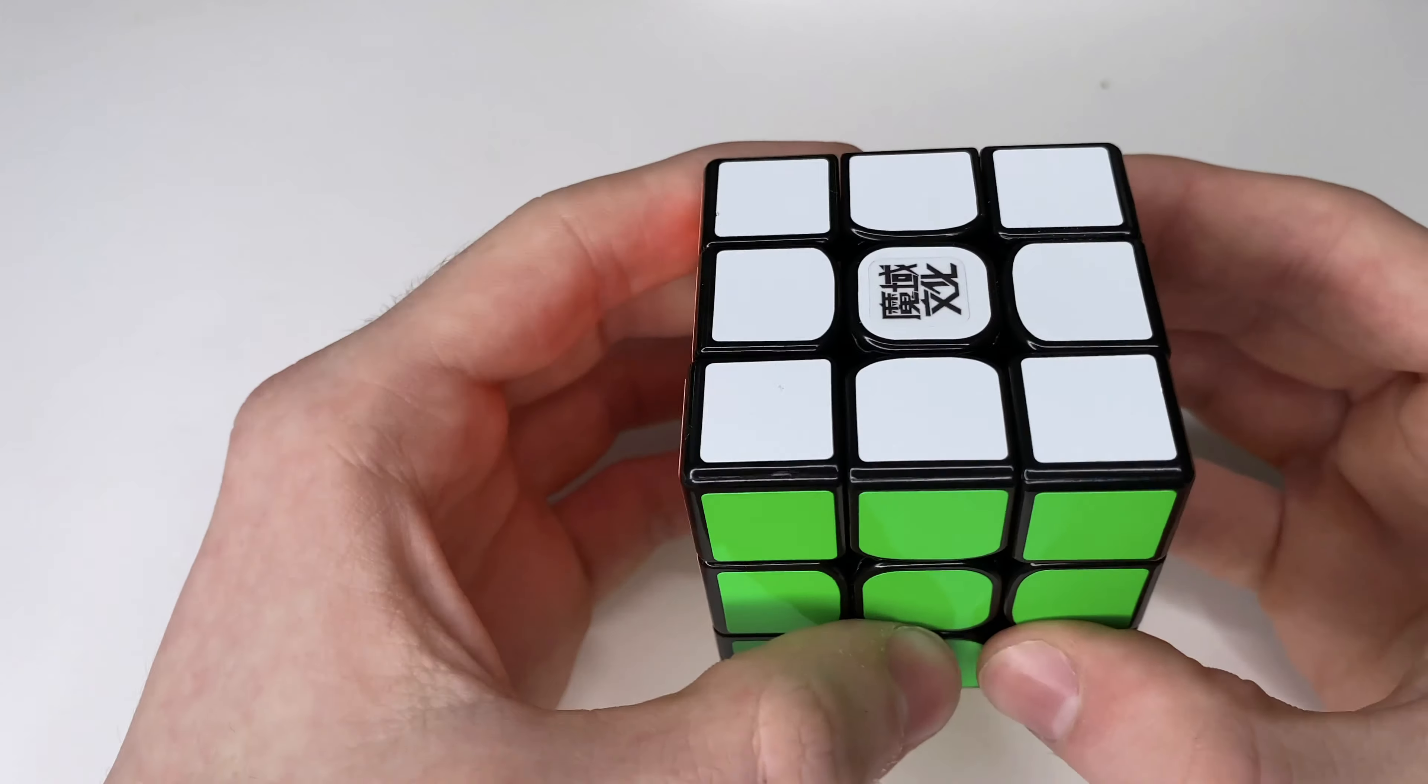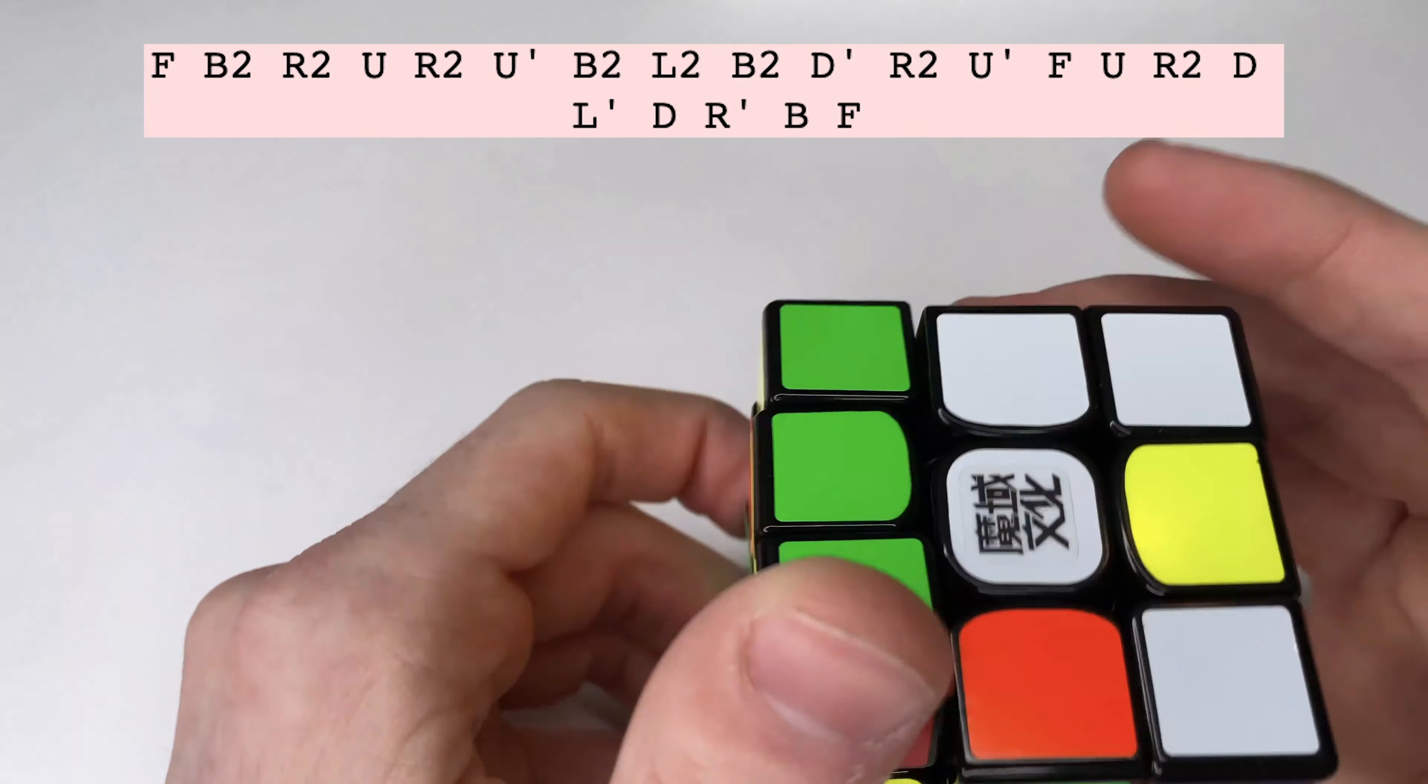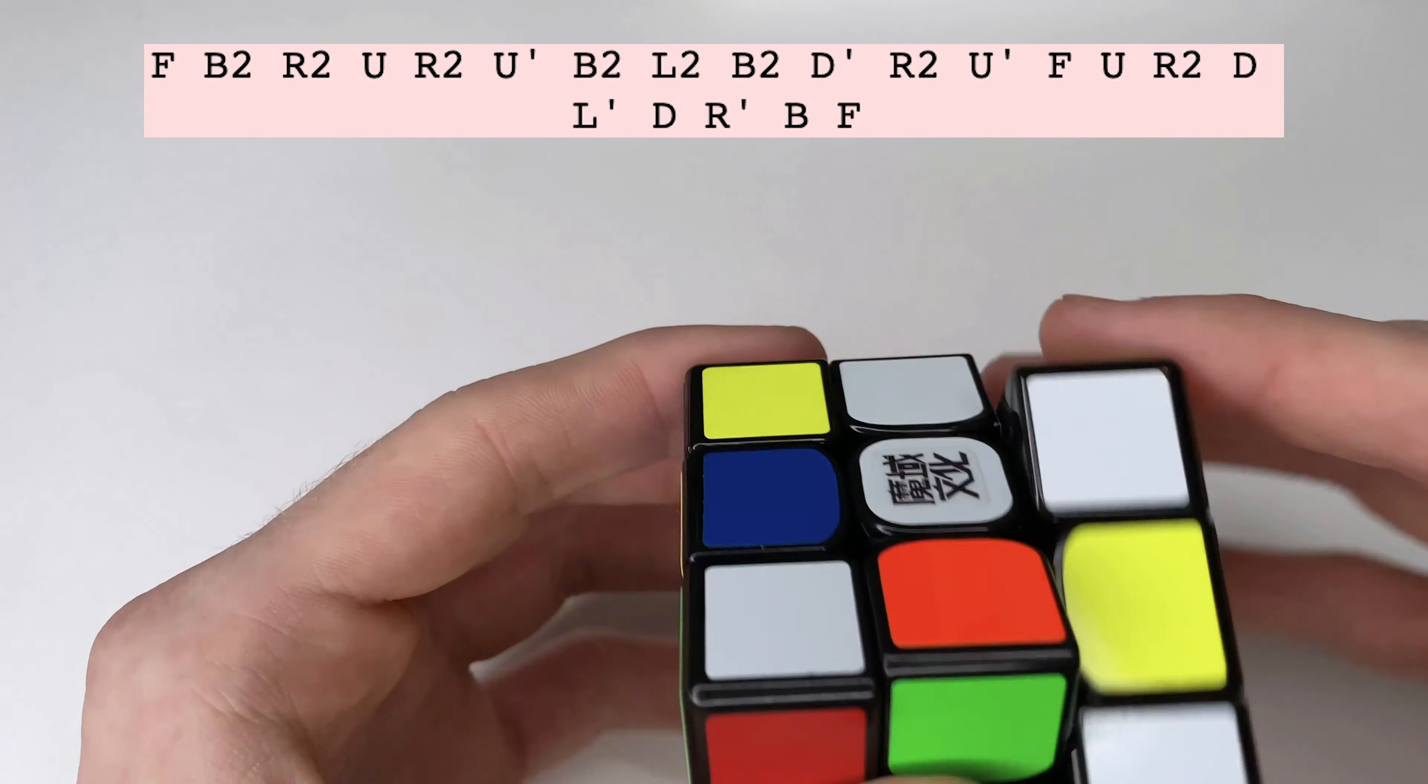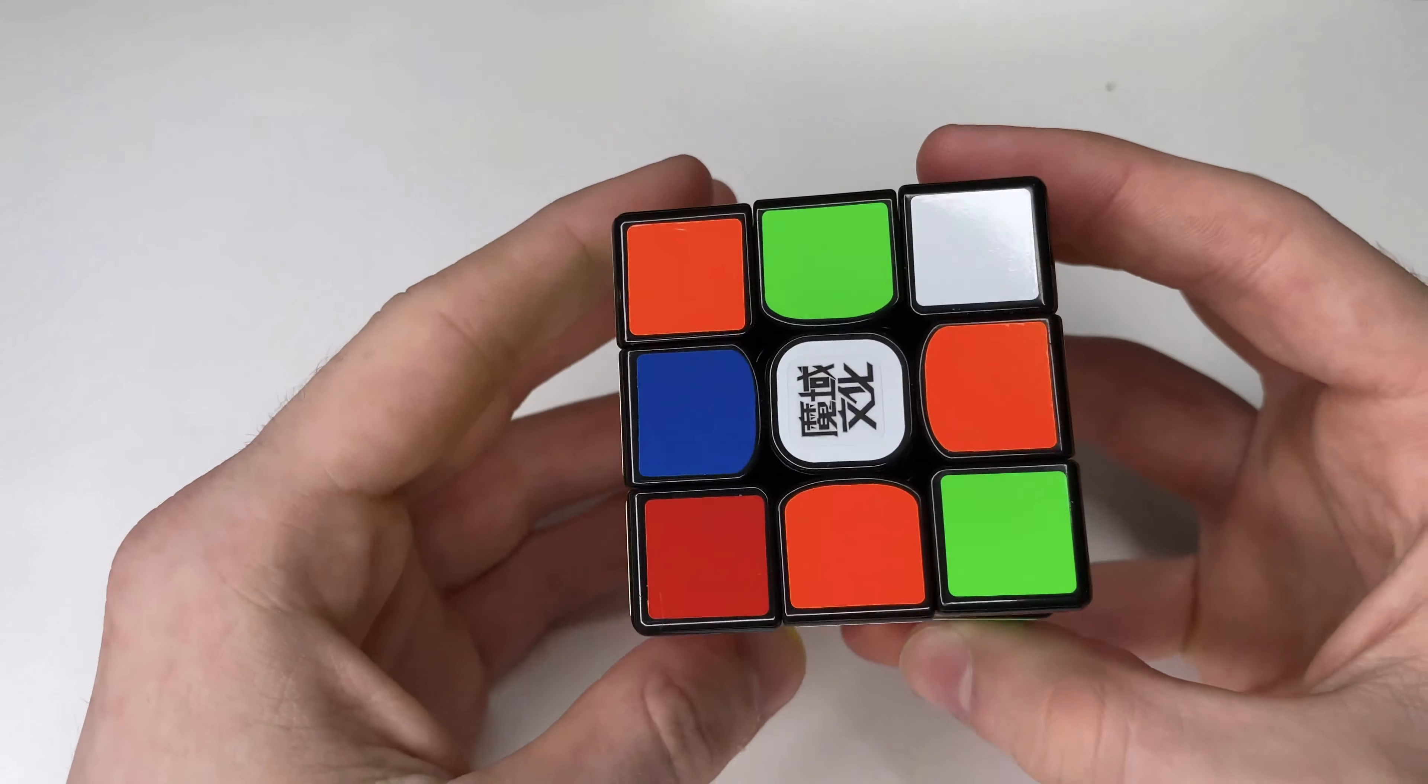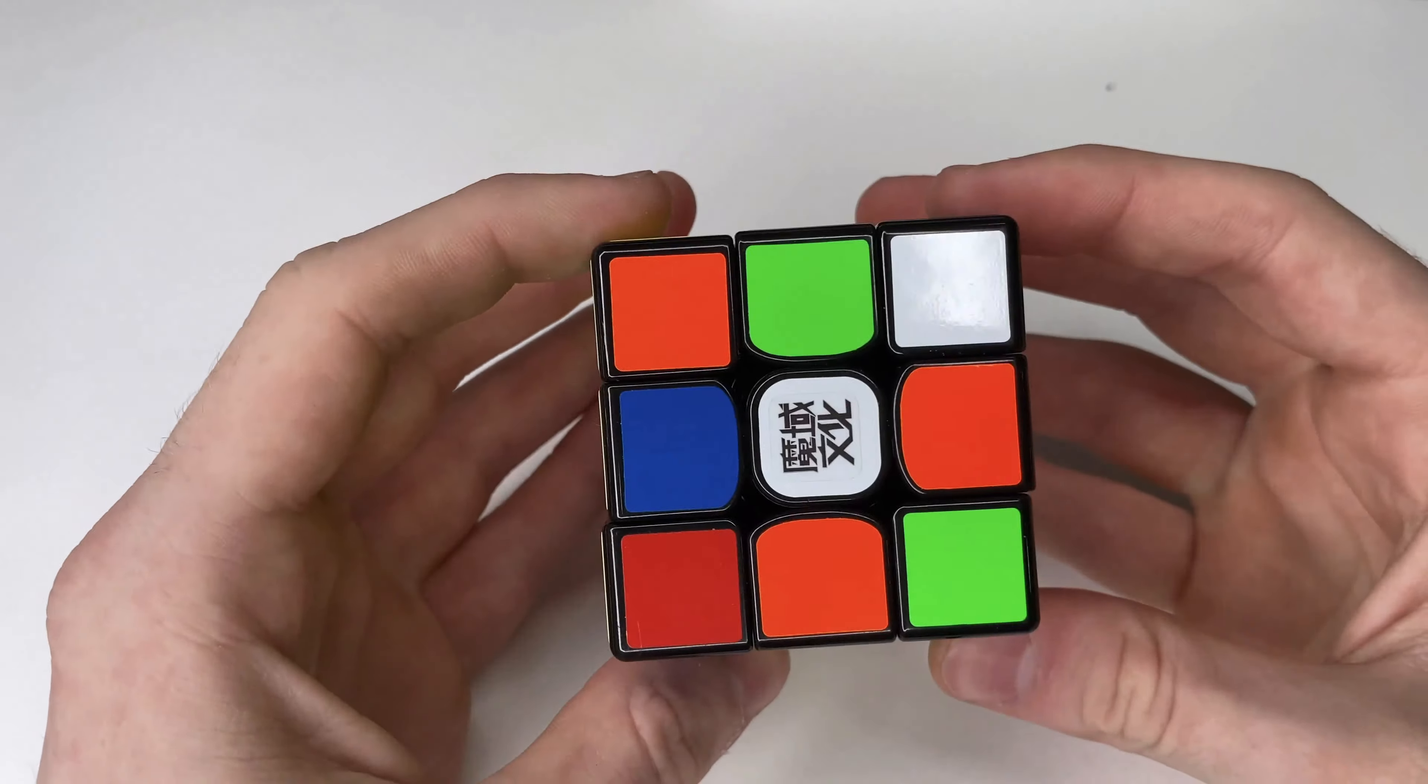Alrighty guys, so the first scramble I'm going to put it up on the screen here and it is F, B2, R2, U, R2, U', B', L2, B2, D', R2, U', F, U, R2, B, L', D', R', B. I will wait for a second. You guys can pause it and finish that. But this is what it looks like with green in front, white on top.